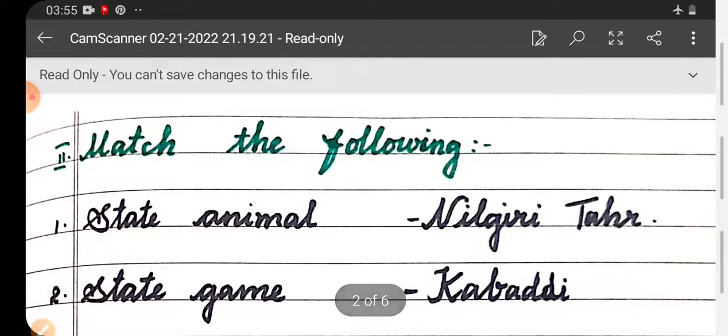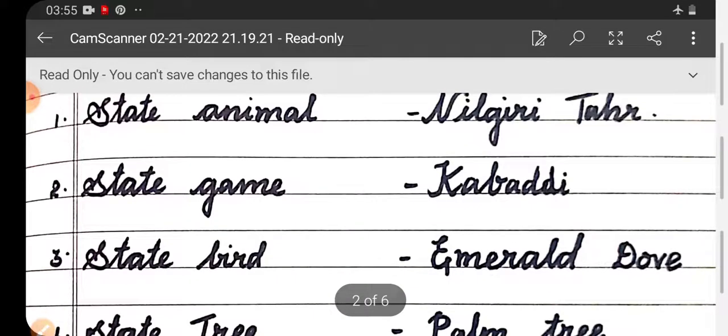Roman letter two: Match the following. First one, state animal: Neelgiri Tahr. Second one, state game: Kabaddi. Third one, state bird: Emerald Dove.